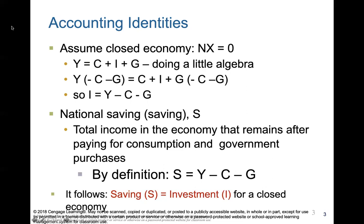This is equivalent to national savings, because national savings is the total amount of income the economy has remaining after it pays for consumption C and government purchases G. So by definition, savings also equals Y minus C minus G. If I equals Y minus C minus G, and S equals Y minus C minus G, we find that in a closed economy, savings equals investment.